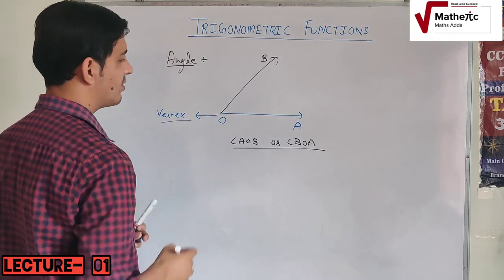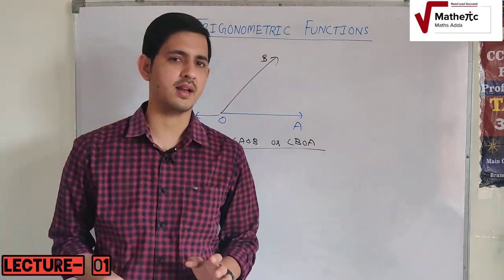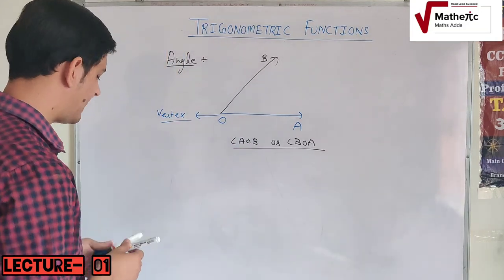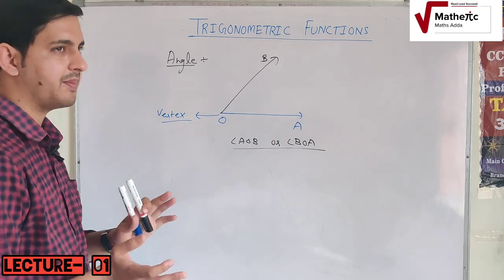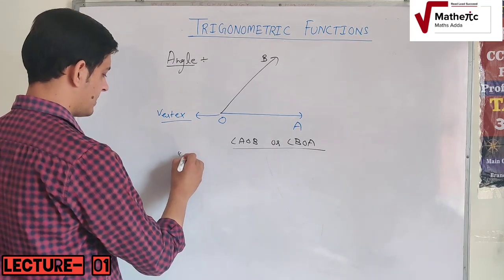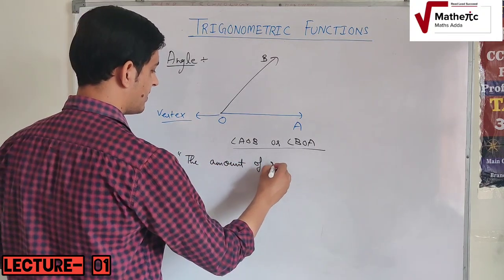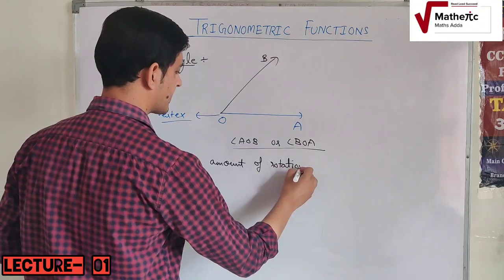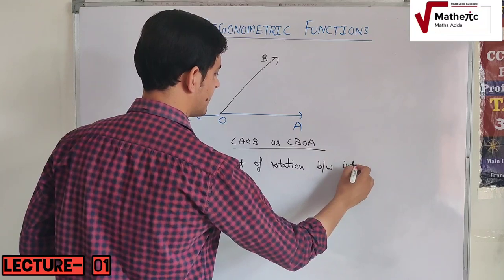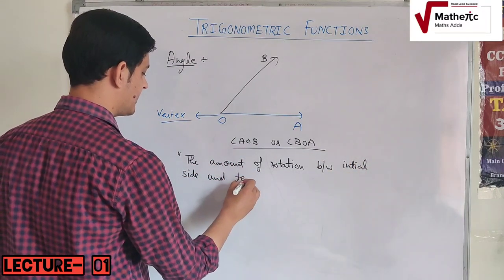So, we call this point O the vertex. Now, let's talk about the measurement of an angle. The measurement of an angle is the amount of rotation between the initial side and the terminal side.